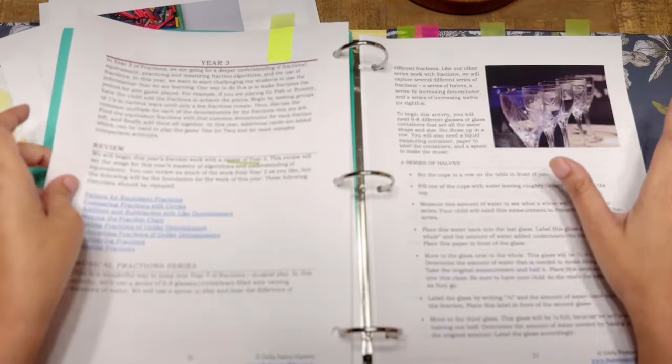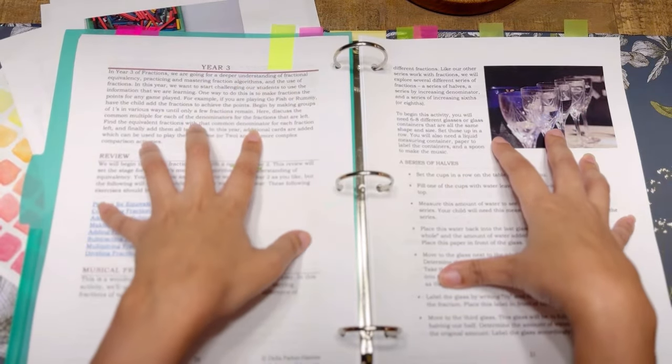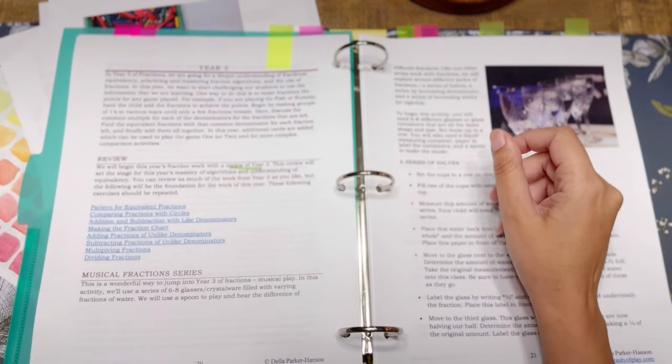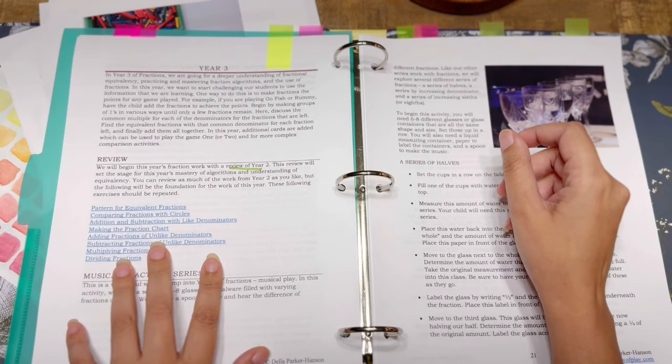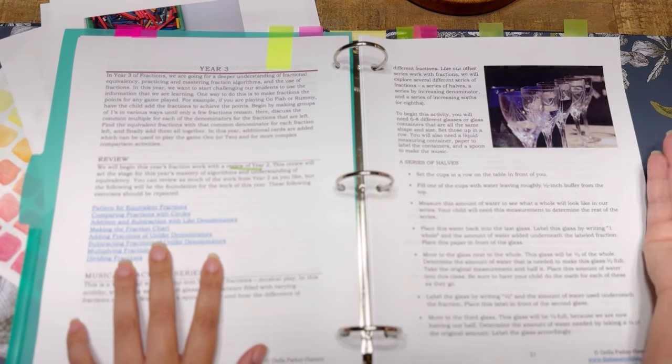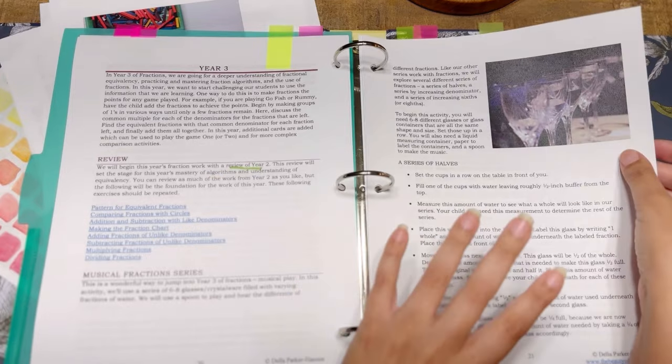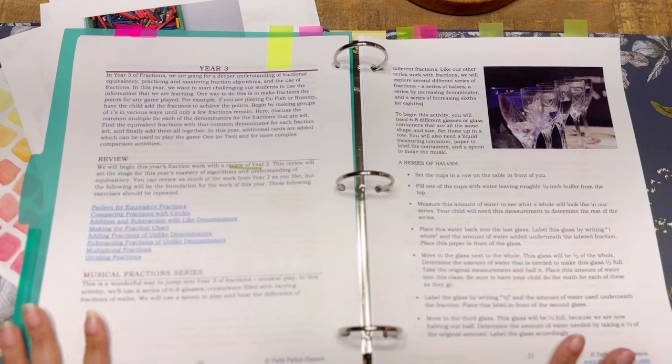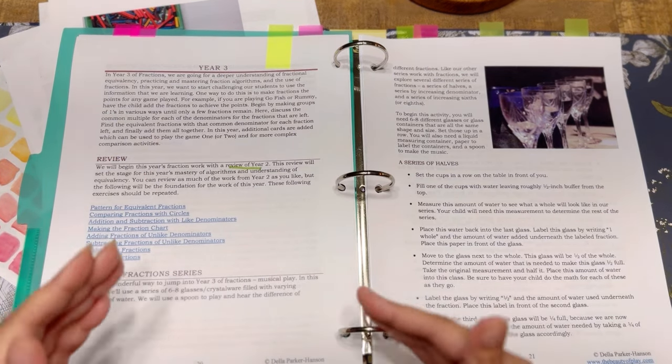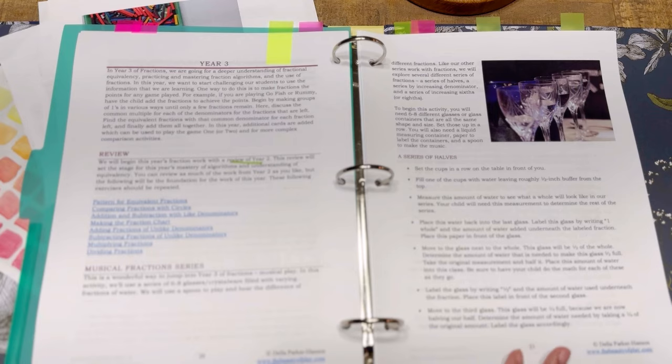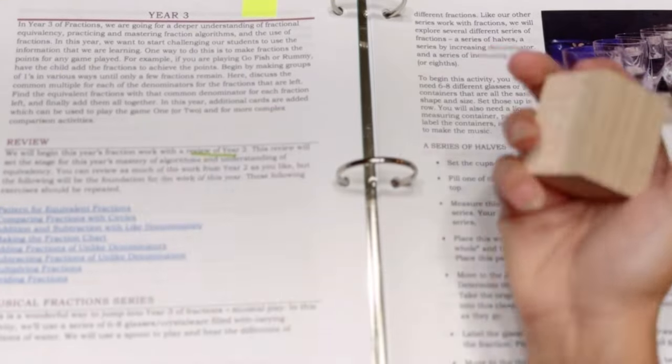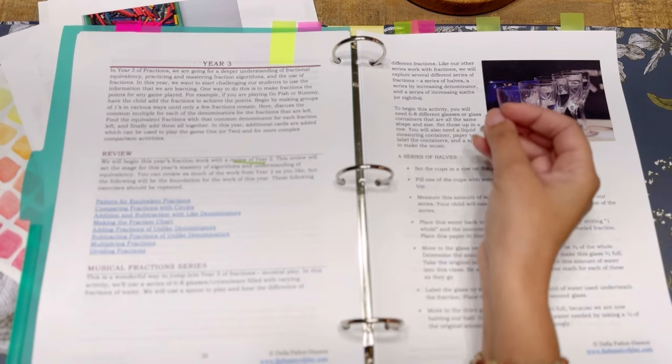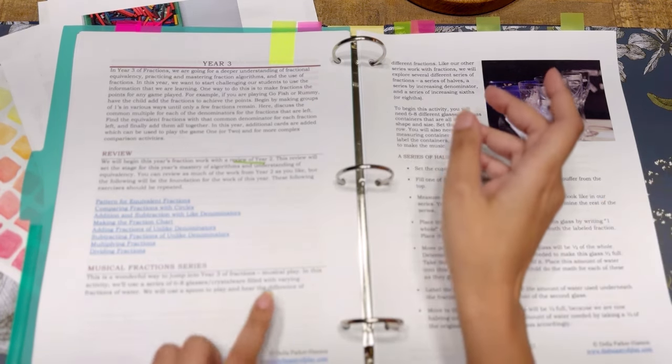Here to jump into year three, she has a musical play. So in this activity, she will use six to eight glasses, crystal ware filled with varying fractions of water. Then you will use a spoon to play and hear the difference of the different fractions. I mean, if that is not the most perfect way to start a block of math or start a supplement of math, how are you using this? I don't know what is because that to me is involving everything.